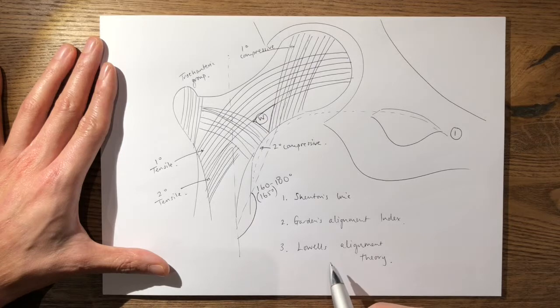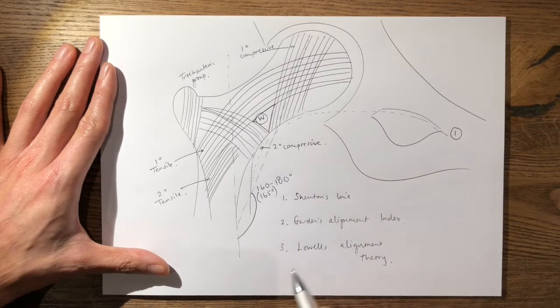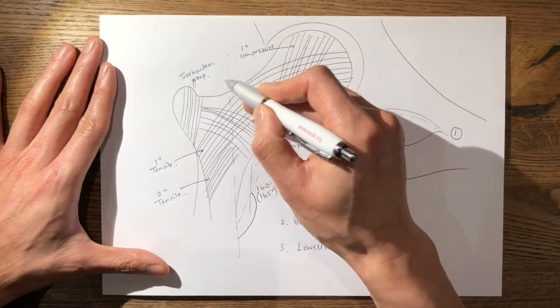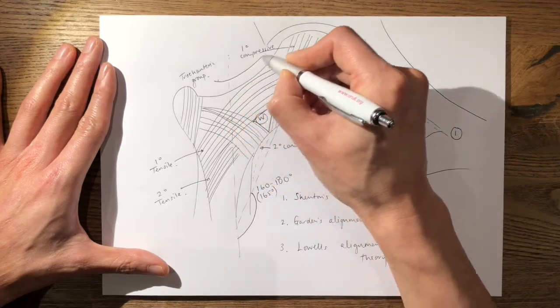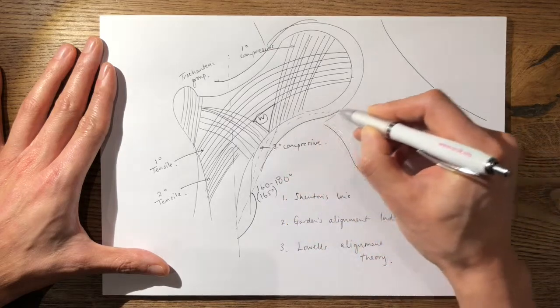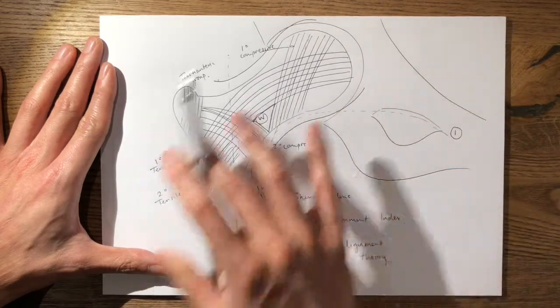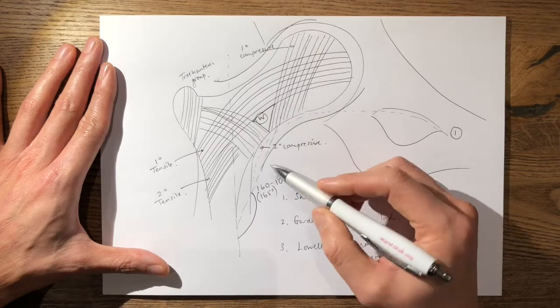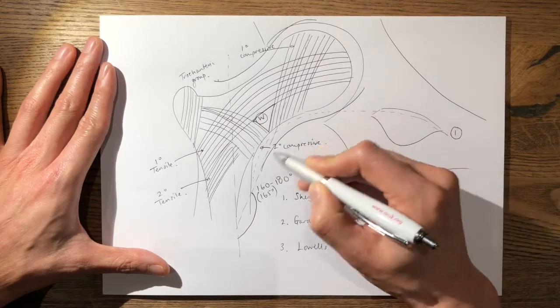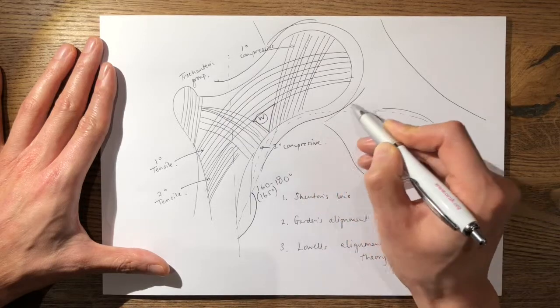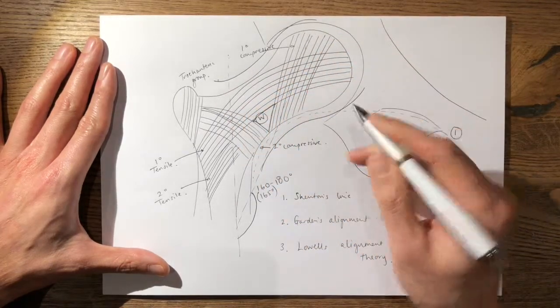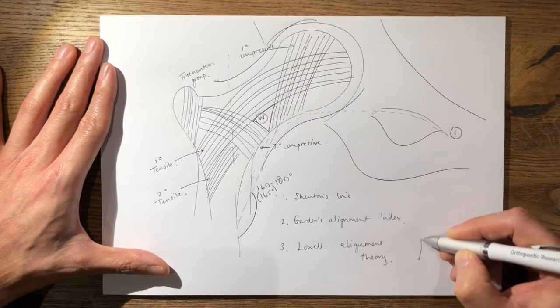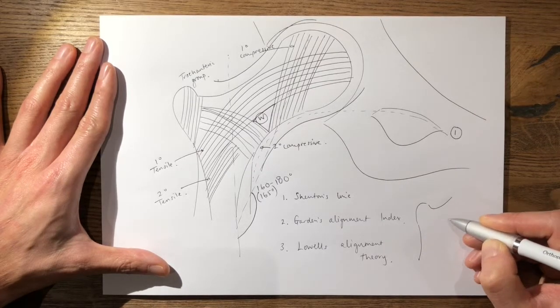Lowell's alignment theory is slightly more complicated in that his theory states that if you've got a perfect reduction, you should have an S-shaped curve on both sides of your femoral neck, so here and here on both views. So now obviously this diagram only represents an AP view, but you get the idea that both sides in a reduced femur should form a gentle S or reverse S curve as the neck continues with the head here and here. If this was malreduced, so if I draw a smaller picture down here.